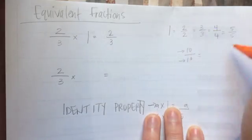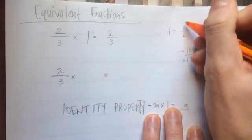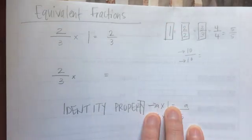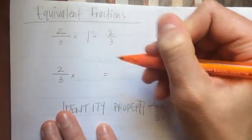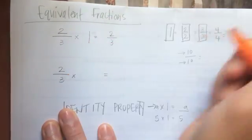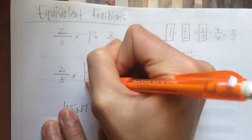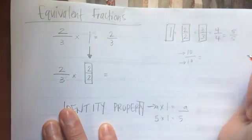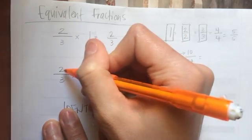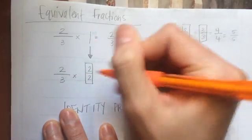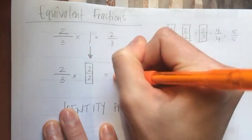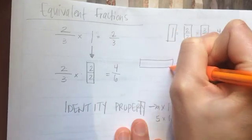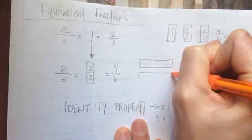So I can use this idea that all these things technically are the same thing as 1 whole to create an equivalent fraction. So 2 thirds times, let's say 2 halves - this is the same thing as 1 - is going to give me an equivalent fraction. I multiply the numerators: 2 times 2 is 4. 3 times 2 is 6. So my new fraction is 4 sixths.